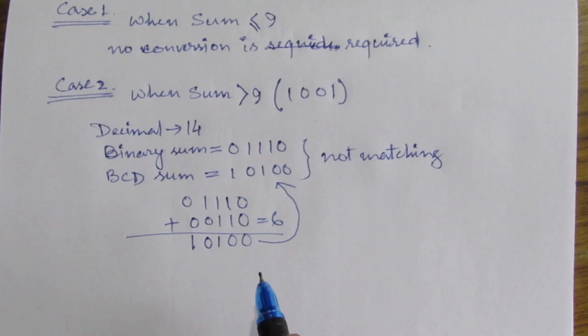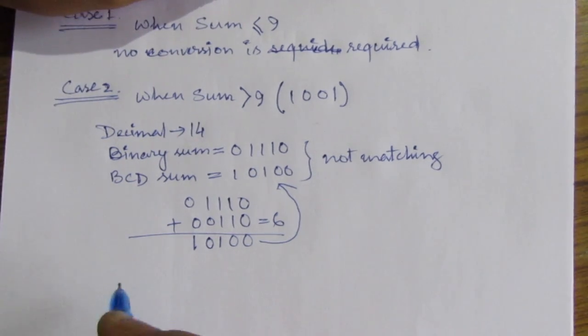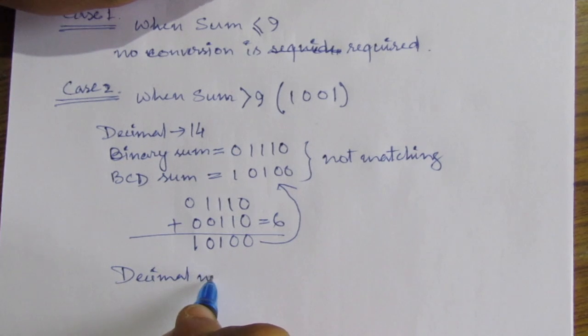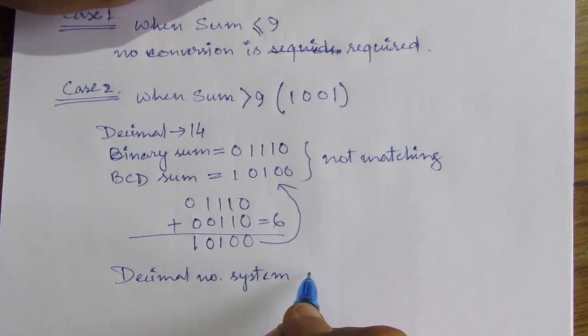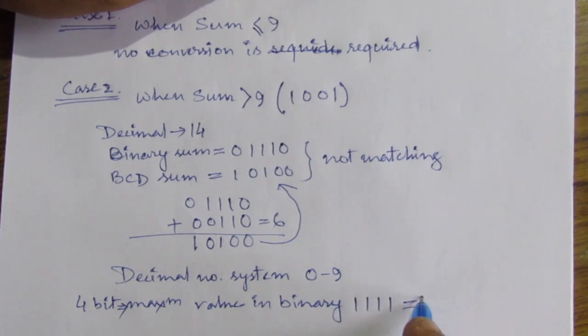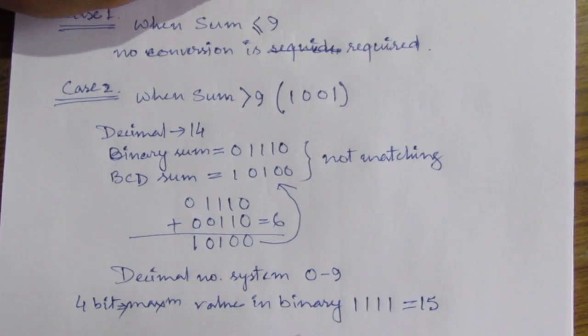Now there arises a question: why add 6, why not another number? In decimal number system, digits are 0 to 9. Using 4 bits, maximum value of binary is 1111, which is nothing but 15. So to overcome this problem, we have to add 6 to the binary sum. That's why we are adding 6.